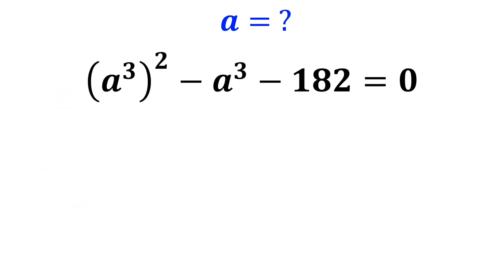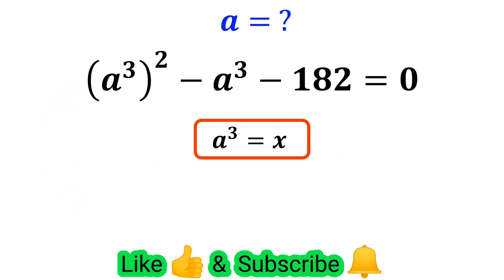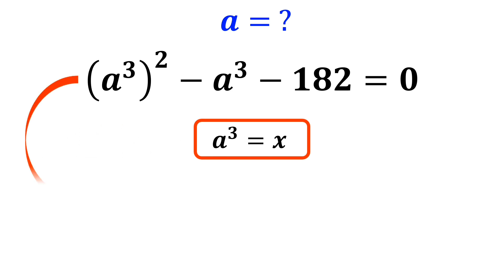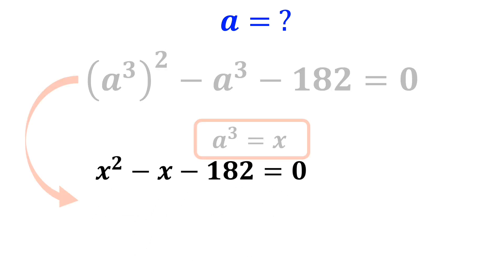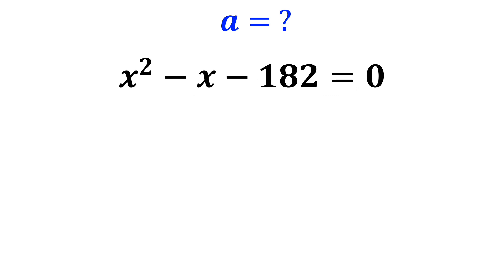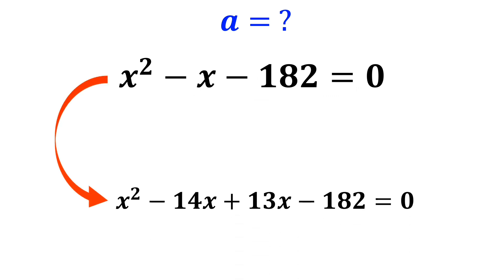Alright, let's assume a to the power of 3 is equal to x. So we can rewrite this expression as x squared minus x minus 182 is equal to 0. Now, we slightly change the form of the equation and write it as x squared minus 14x plus 13x minus 182 is equal to 0.